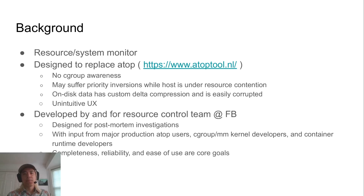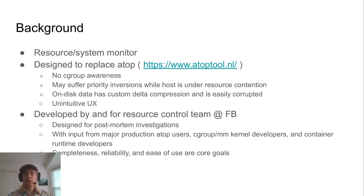BELOW is designed to replace ATOP. ATOP is a similar tool to BELOW — it records system information as a daemon, then you can replay it later. Facebook was a heavy user of ATOP for many years until we replaced it with BELOW. Over the years, we discovered a number of deficiencies we really couldn't work around. The first is a lack of cgroup awareness. Cgroups are a fundamental building block of resources on modern Linux systems and are the canonical way to account for resources and investigate them. ATOP didn't have that, so we had to implement that somewhere.